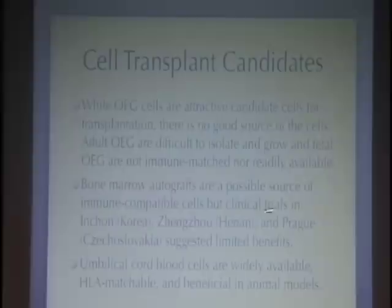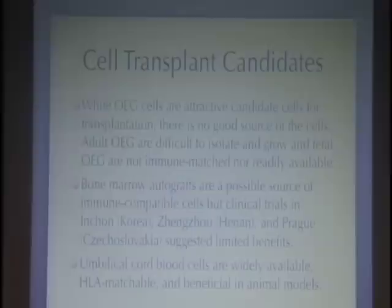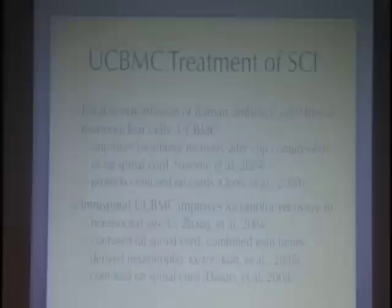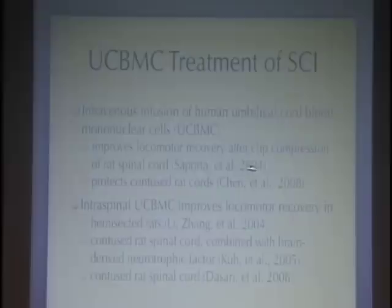Bone marrow autografts are a possible source of immune-compatible cells, but several clinical trials in Incheon, Tsing Tso, and Prague suggested limited benefits of bone marrow stem cells. I could not justify the use of bone marrow stem cells in our clinical trials, and so we began to consider umbilical cord blood cells. They're widely available, HLA matchable, and beneficial in animal models of spinal cord injury.